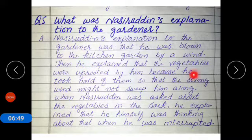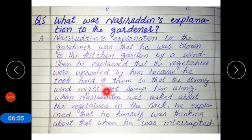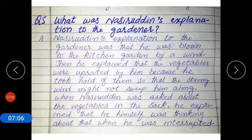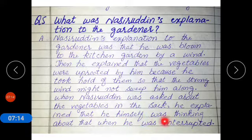He took hold of them — pakde hue tha — so that the strong wind might not sweep him along — apne saath uda kar le jaaye. When Nasiruddin was asked about the vegetables in the sack — sack means bori — he explained that he himself was thinking about that when he was interrupted — jab ke usne mudakhlat kar di.